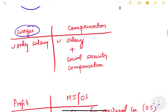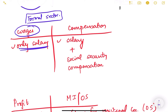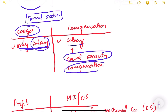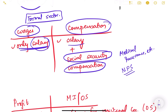Before, wages included only salary — whatever the monthly or annual salary the company paid its worker — and this was for the formal sector where companies are registered under the Companies Act. But apart from salary, the company also pays social security compensation like medical insurance, health insurance, and contributions to NPS — the National Pension Scheme. So now we look at total compensation, which includes both salary and social security compensation. This broadens the concept beyond just wages.